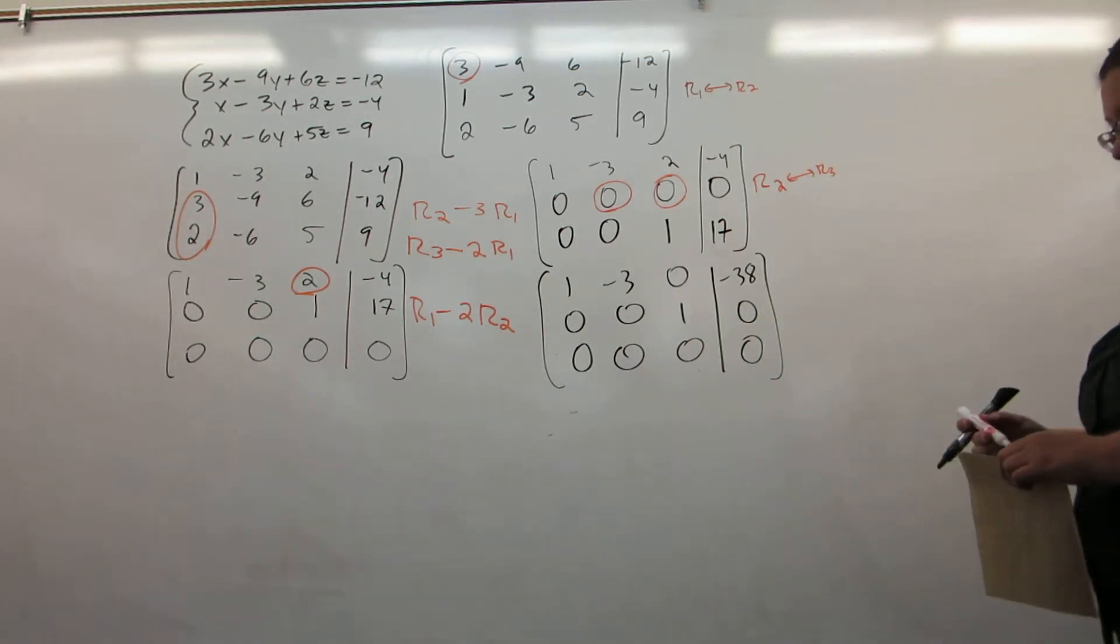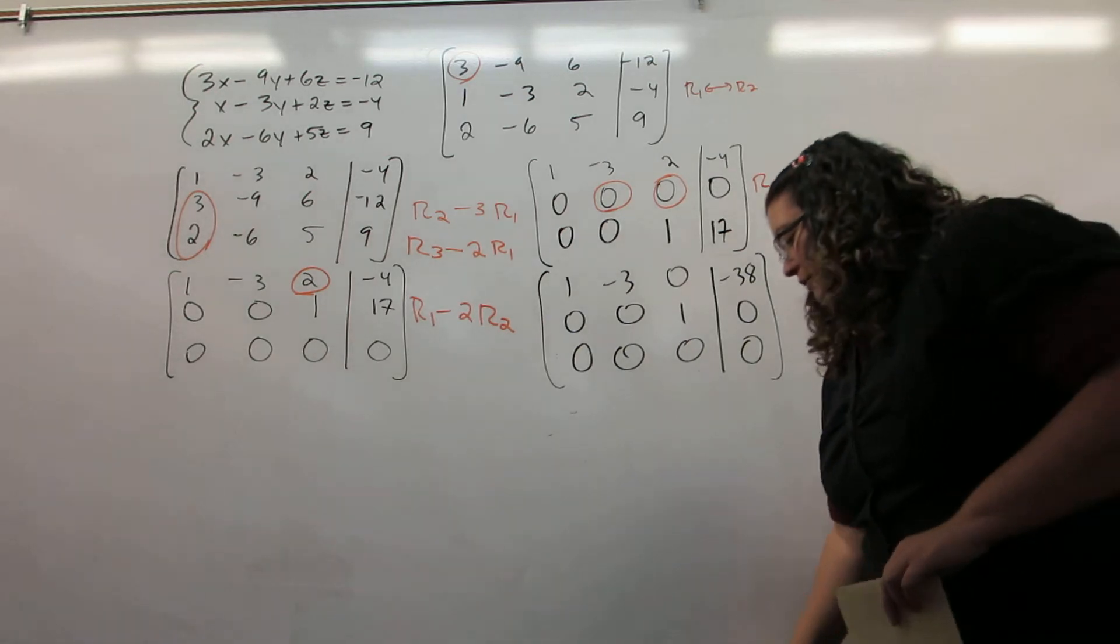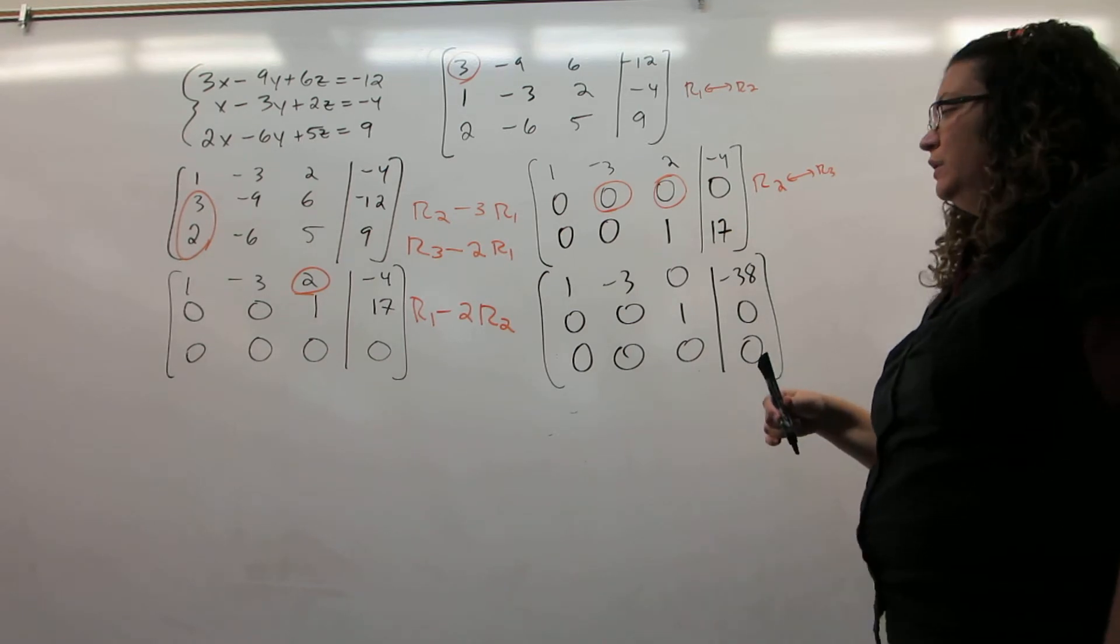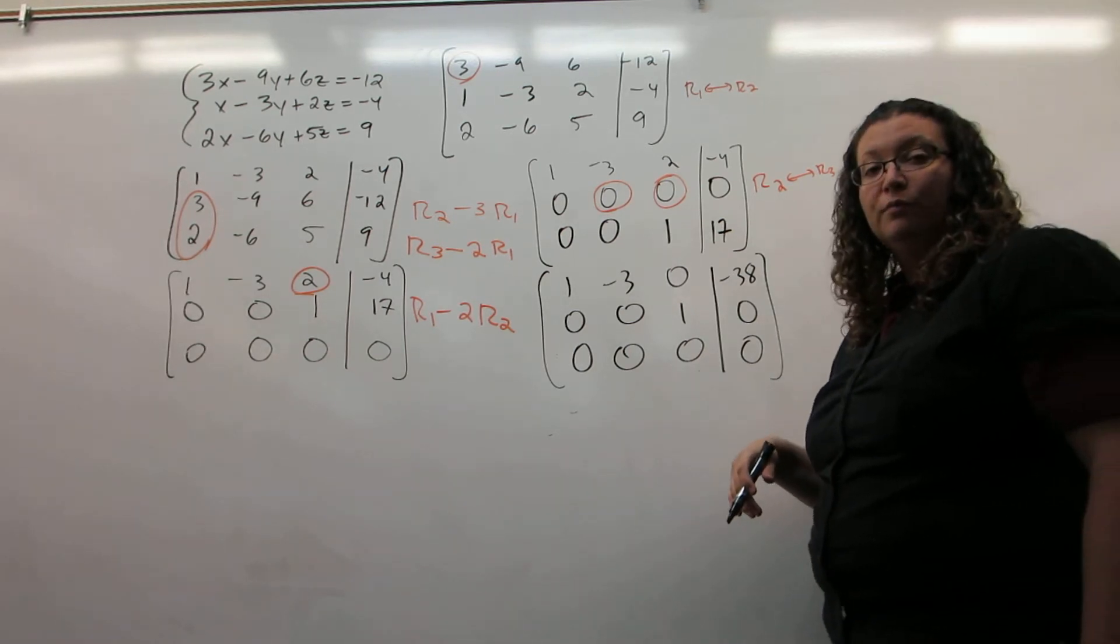This is as far as I can row reduce. I have no other numbers I can turn into 1s. I've cleared out above and below the 1s. So now it's time to interpret our answer.